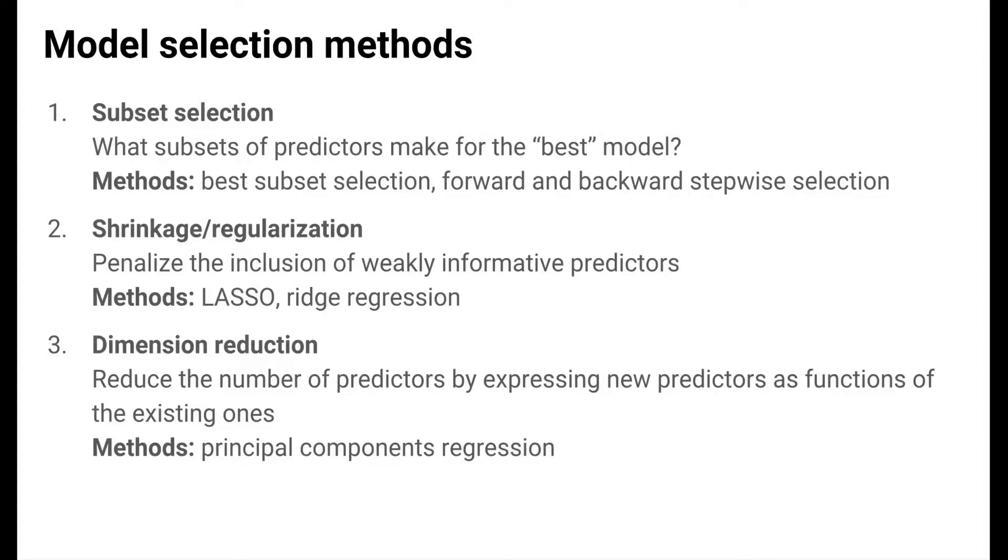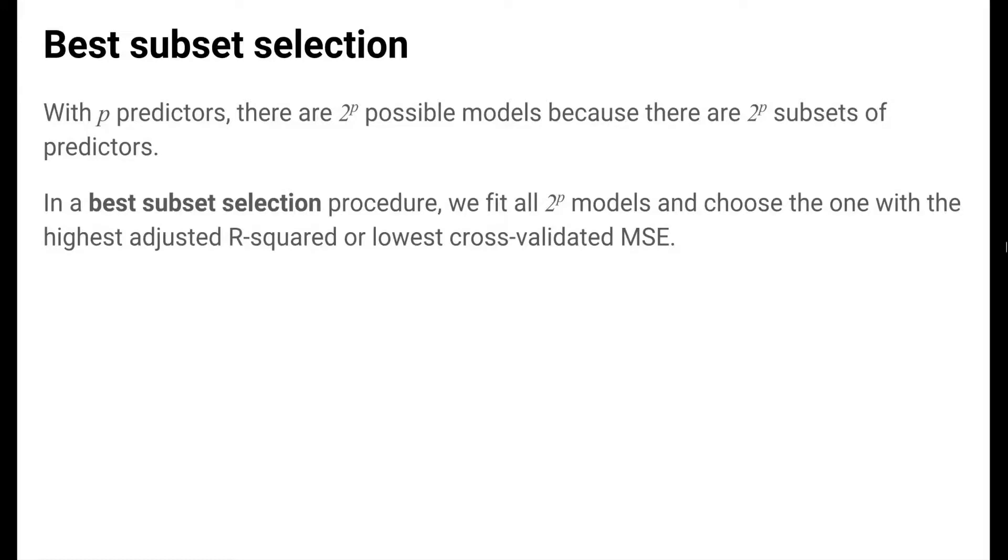Let's start our tour of subset selection methods by talking about best subset selection. When we have P predictors, there are 2 to the P possible models that can be formed from the inclusion and exclusion of these predictors. Why? Because for every predictor there are two choices: include it or exclude it. Two choices for each of these P predictors result in 2 to the P possible models.